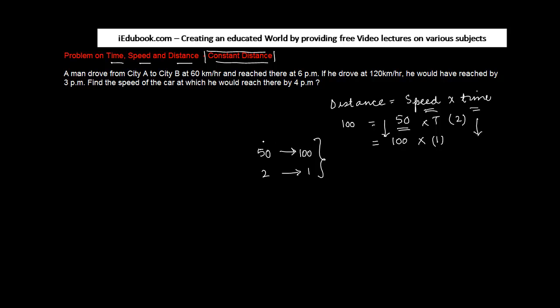Now in this case, how much is the speed increasing? From 50 to 100 it is 100 percent. And how much is the reduction in time from 2 to 1, which is 50 percent. So increase in speed by 100 percent reduces the time by 50 percent. Or in other words, we say that the speed is inversely related to time, which means that any increase in speed will result in a reduction in time.